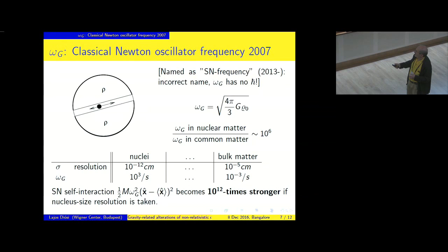Now, it happens in the Schrodinger-Newton equation that, depending on the spatial resolution sigma, omega g becomes equivalent with the Newton oscillator frequency in nuclear matter if the resolution is the nuclear size, or in common matter if the resolution is 10 to the minus 5 centimeters. So remember, Newtonian self-interaction for the center of mass of the bulk looked like this, with the omega. And it's almost frightening that, frightening because we don't know what sigma we should use.